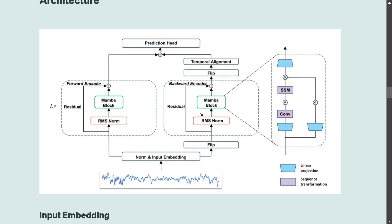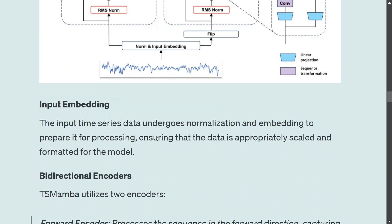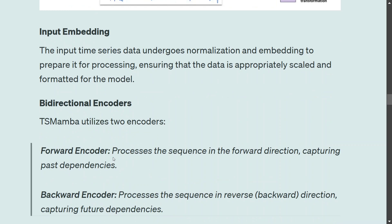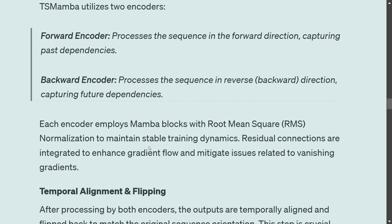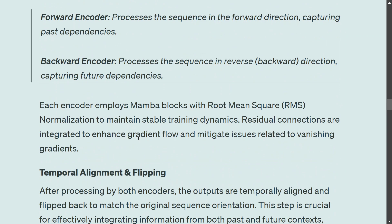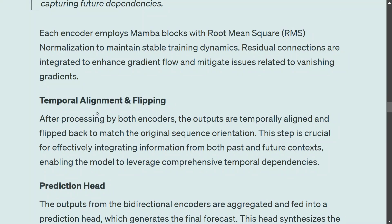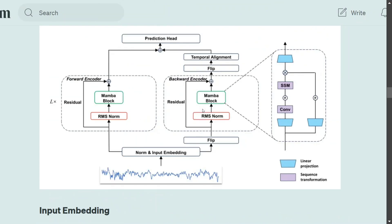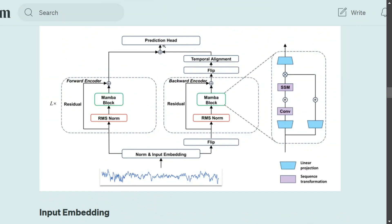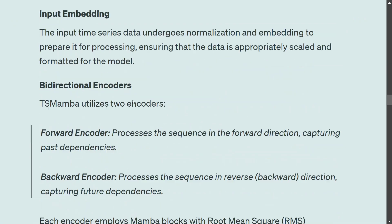Now looking at the architecture, which is a little complex — we will break it down briefly. First is input embedding, where the entire data is represented as an embedding. Then there are bidirectional encoders: a forward encoder and a backward encoder, looking at the time series from both ends. Each encoder contains Mamba blocks with root mean square normalization — these are the selective state space models we discussed. There is temporal alignment and flipping for the backward encoder since it is reading in reverse. Finally, the outputs from both the forward and backward encoders are fed to a prediction head and combined to produce the final prediction.